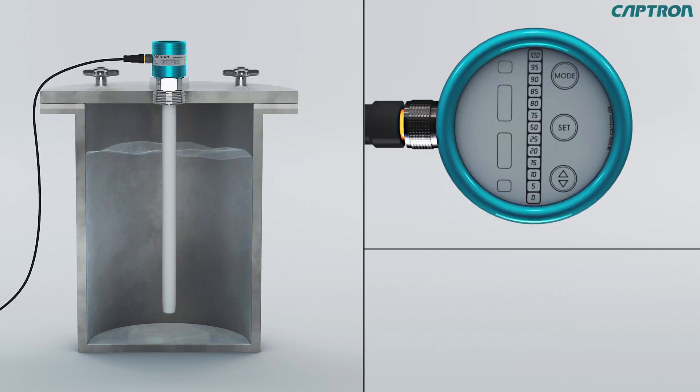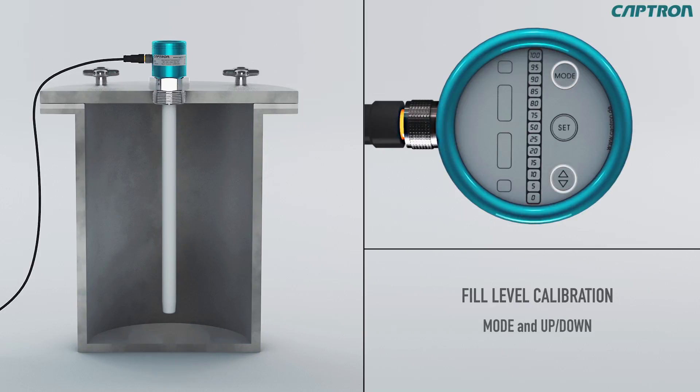In order to adjust the fill level, we go now to the adjustment mode. Touch mode and up-down at the same time for approximately 5 seconds until the 0%, 100%, as well as MN light up. Now let go of all the buttons at the same time. The last set minimum value will blink. Now the probe will jump automatically to the minimum alignment.